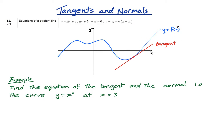The normal to the curve y equals f of x at that same point is this line here. I've drawn a perpendicular line — so the normal is perpendicular to the tangent. This is the normal. That's a tangent, that's a normal.